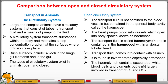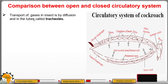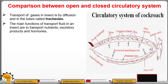Arthropods also include arachnids like ticks and spiders, as well as millipedes and centipedes — organisms with jointed appendages. The haemolymph contains suspended white blood cells and pigments but is not largely involved in the transport of oxygen and carbon dioxide. Gas transport in insects is by diffusion through tubes called tracheoles. The main functions of the transport fluid in an insect are to transport nutrients, excretory products, and hormones.